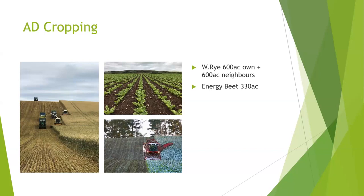We started harvesting energy beet just last week, with harvest running from early to mid-October right through to mid to late April — quite a long harvest window. That feeds into the AD plant along with other feedstocks such as hen pen from our broiler enterprise; about 70 to 80 percent of the hen pen produced goes into the AD plant. The plant also produces digestate in liquid and solid forms, which are very good fertilizers, both high in potash. We use solid digestate in front of root crops and veg, and liquid digestate is spread using a dribble bar on cereals and cultivated land.